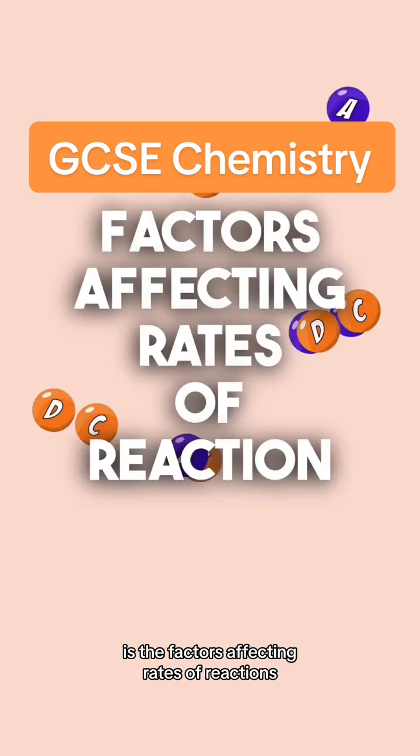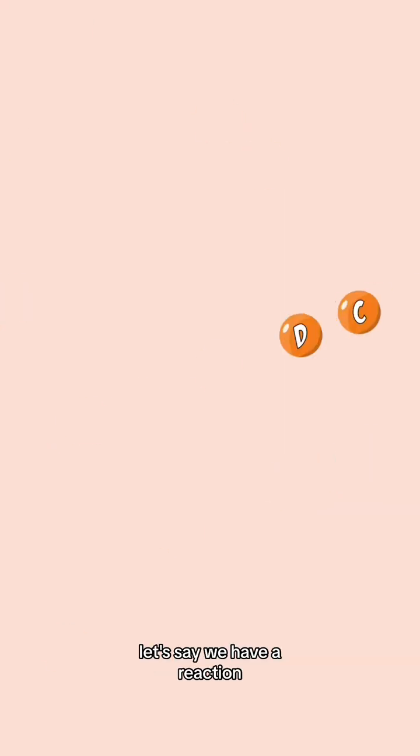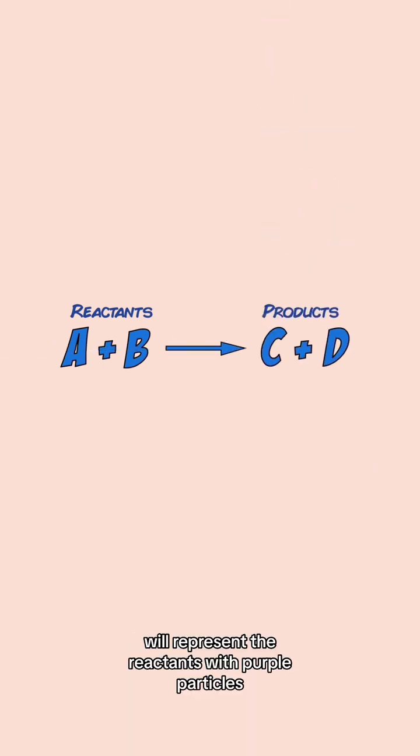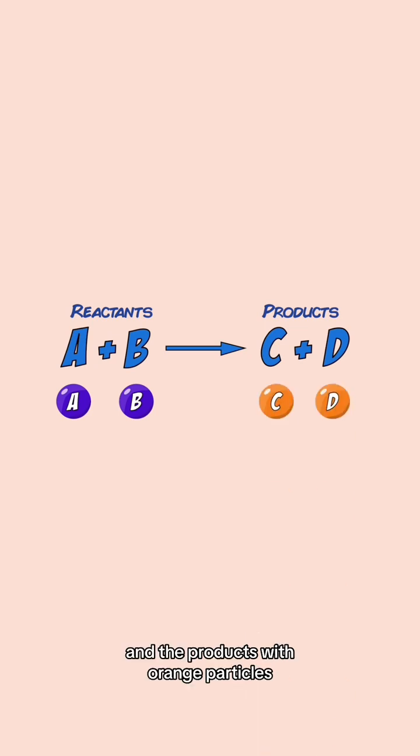Here are the factors affecting rates of reactions in 99 seconds. Let's say we have a reaction where reactants A and B are reacting to form products C and D. We'll represent the reactants with purple particles and the products with orange particles.